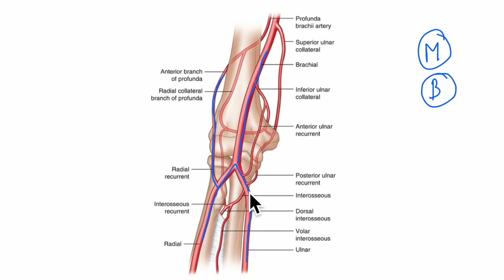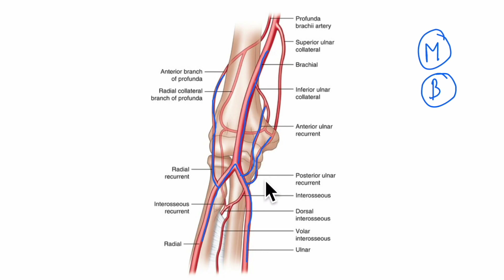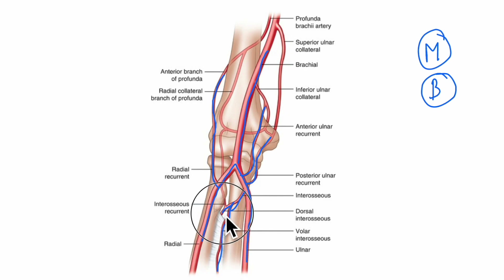The ulnar artery gives off three main branches: the anterior ulnar recurrent branch, the posterior ulnar recurrent branch, and the common interosseous branch. The common interosseous branch divides into an anterior interosseous branch (volar interosseous) and a posterior interosseous branch (dorsal interosseous). The posterior interosseous branch then gives off the interosseous recurrent branch.